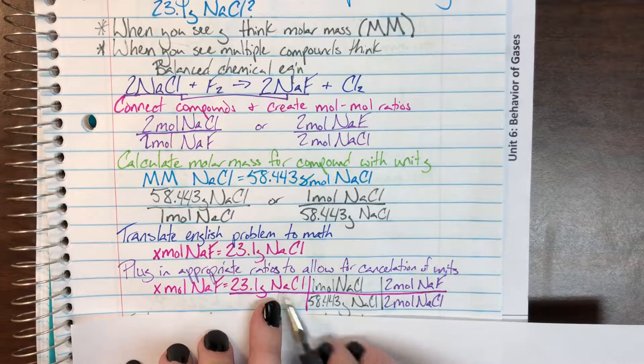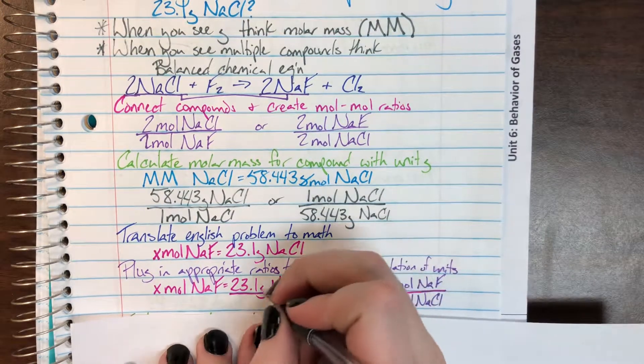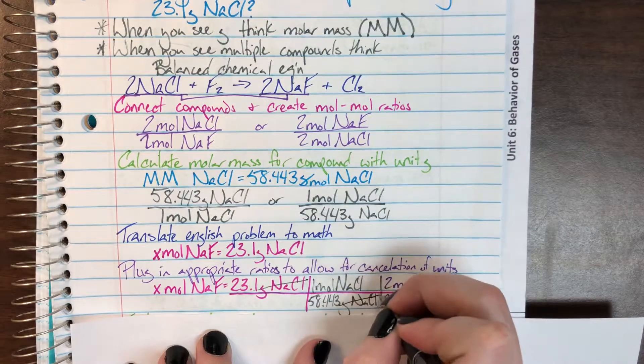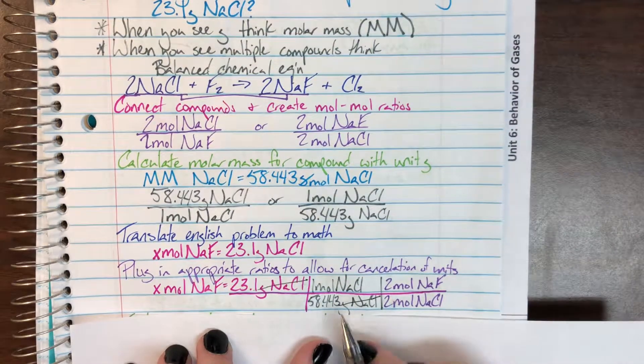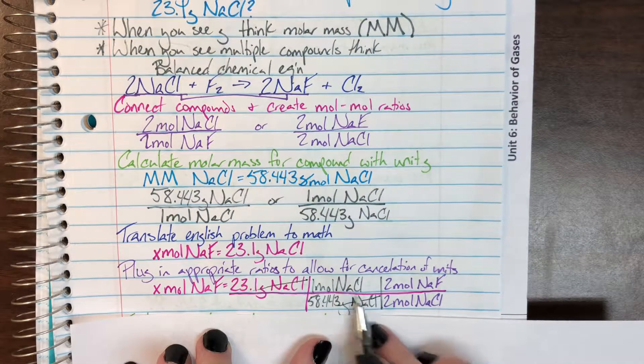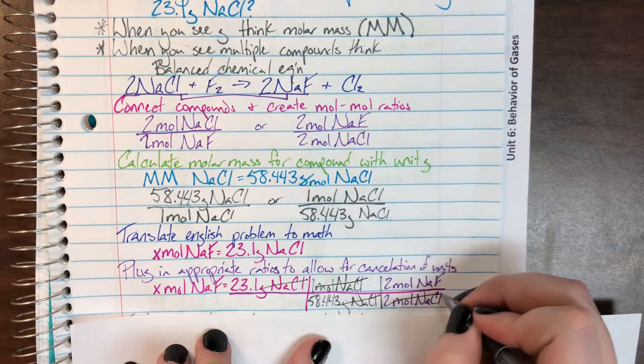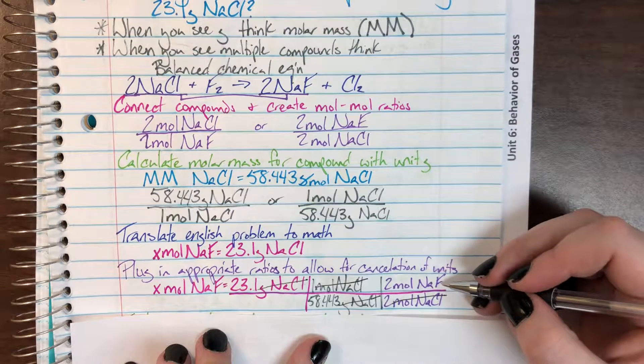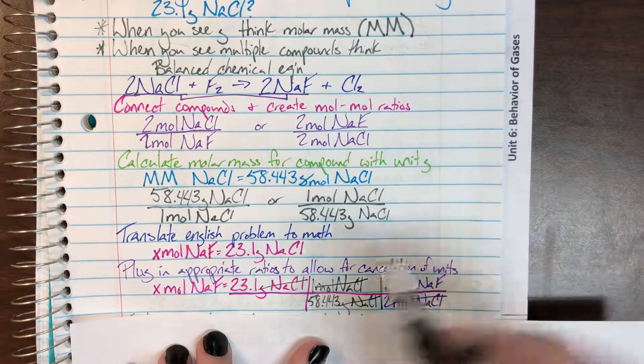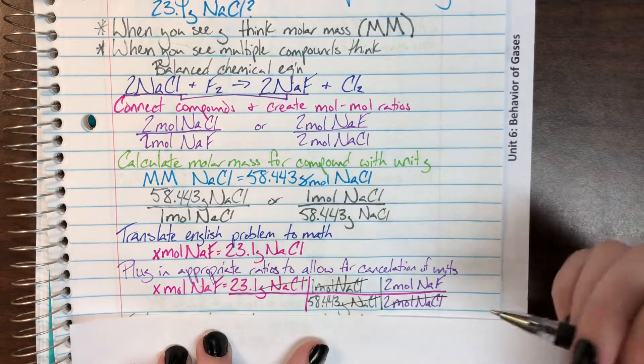I needed to cancel out grams of sodium chloride. I chose the one with grams of sodium chloride at the bottom. Great. I can cancel that now. I needed to cancel moles of sodium chloride. So, I chose the one with moles of sodium chloride at the bottom. Great. I can cancel that now. And now I'm left with moles of sodium fluoride. Which is the thing that I said that I wanted.